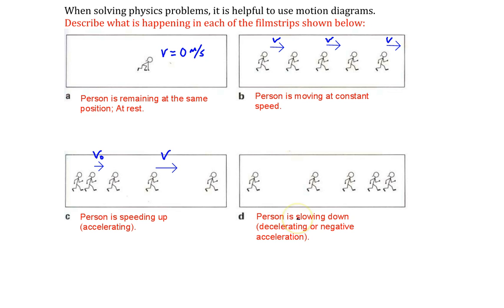And when they're slowing down, then we should have the reverse situation. So here's my initial velocity at time 0, and there's my final velocity.